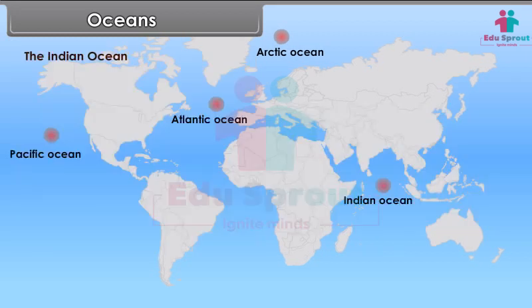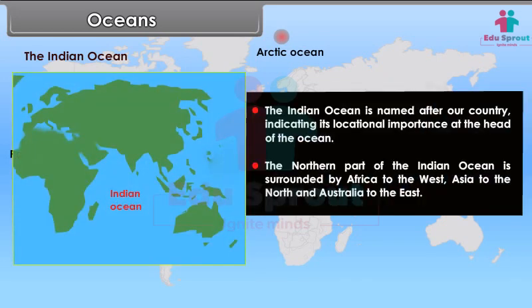The Indian Ocean is named after our country, indicating its locational importance at the head of the ocean. The northern part of the Indian Ocean is surrounded by Africa to the west, Asia to the north, and Australia to the east.